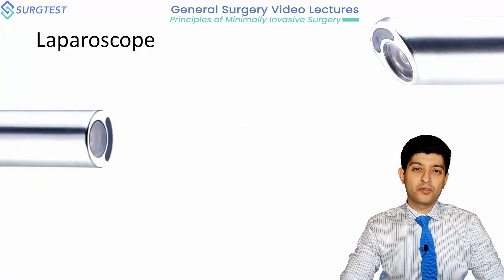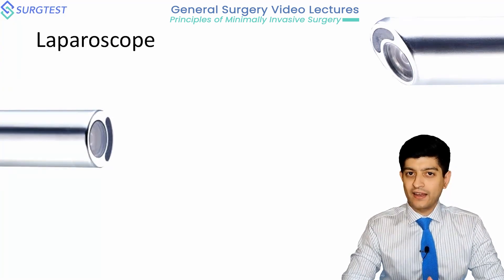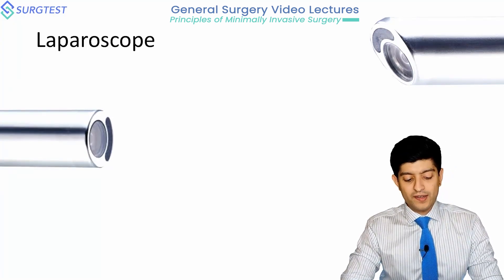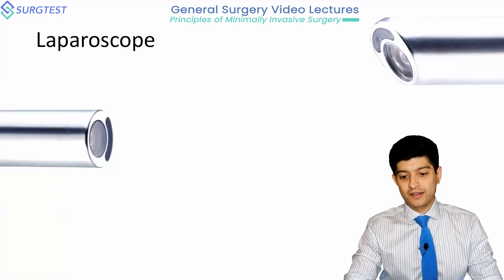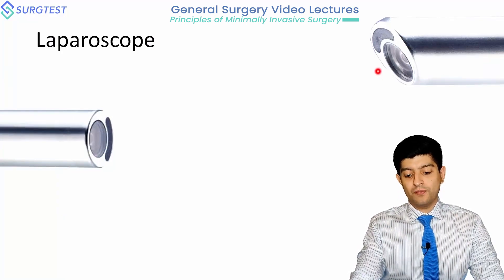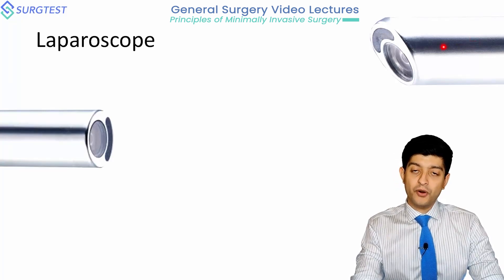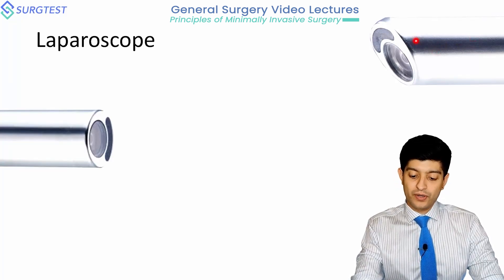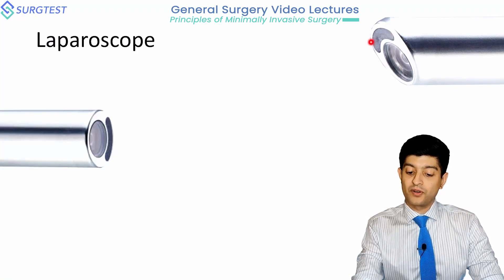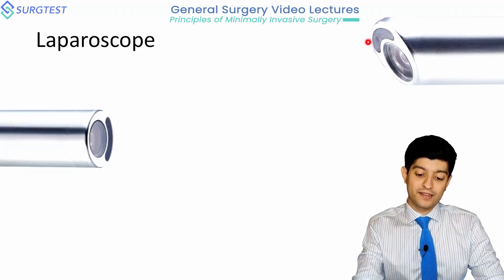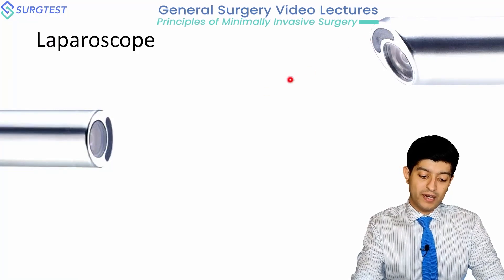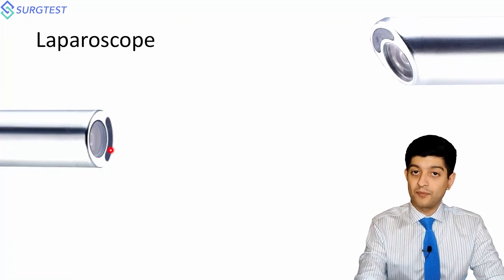When you look at the tips of these laparoscopes, they come in several angles. The one on the left is a straight-on cylinder, whereas the one on the top right has a slight angle. Another important point is that there is a lens system at the end and also a fiber optic area where the light is eventually emitted from, and this is constant in all laparoscopes.